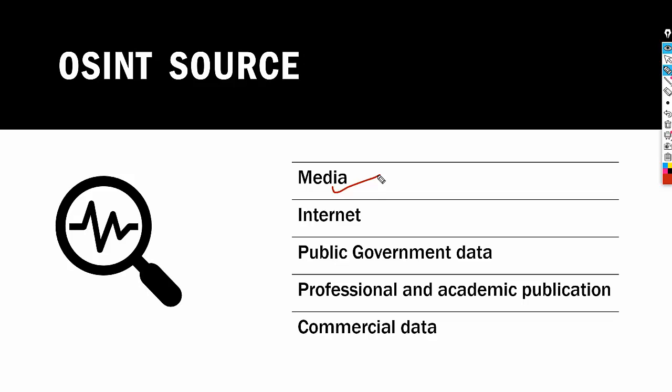The second source is the internet: online publications, blogs, discussion groups, cell phone videos, user-created content, YouTube content, social media, websites, and vlogs. This source outpaces a variety of other sources due to timeliness and ease of access. The third source is public government data — reports, budgets, hearings, telephone directories, press conferences, websites, and speeches. Although this source comes from an official source, it is publicly accessible and may be used openly and freely.